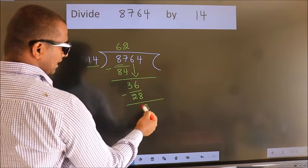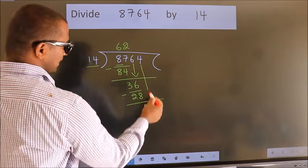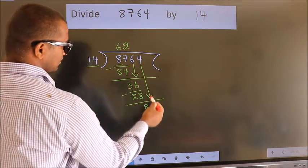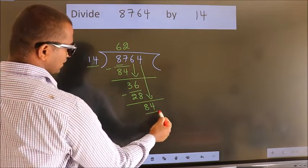We get 8. After this, bring down the beside number. So 4 down. So 84.